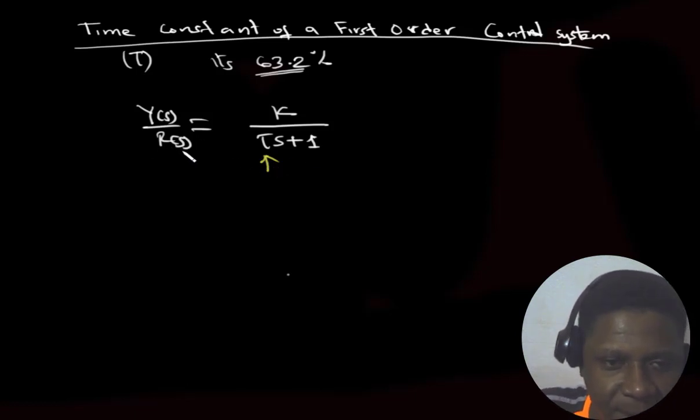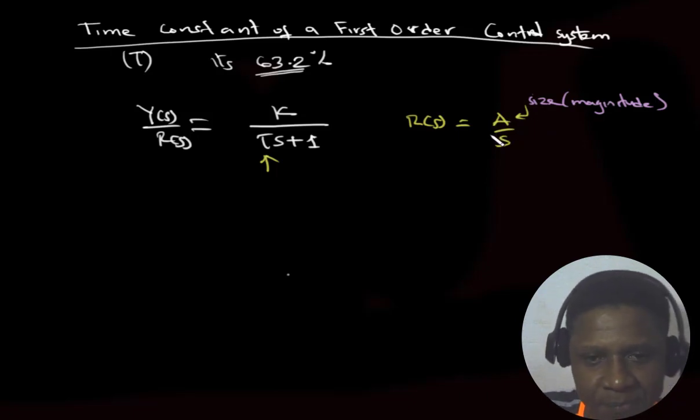So let's say that we have an error as a step input of magnitude or size of A. The Laplace transform can be represented as follows: R of S, which is our input, equals A over S, where A is the size or magnitude of our input. In this case it's a step input.